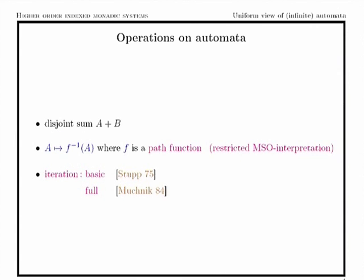The first operation is quite usual: the disjoint sum. The second is the inverse path function — when we work with finite automata we often need to connect them in some way. This is almost like a logical interpretation using monadic second-order logic, but in a restricted fragment, because if we take the whole power of MSO then some results could not be obtained in this way. This is just a technical point.